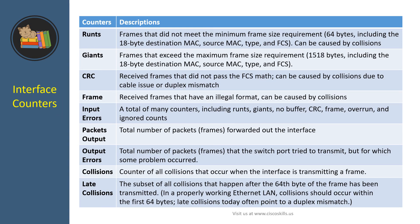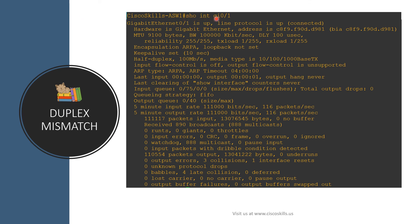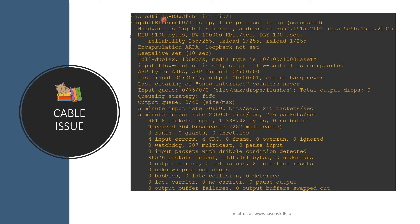The 'show interface' command gives you a list of counters. In normal operation, all counters should be equal to zero. If a counter is greater than zero, you can use the table to find out the cause. From the same 'show interface gi0/1' command on asw1, scrolling down you will see four late collisions — from the table, late collisions often point to a duplex mismatch. Logging into dsw3 and issuing 'show interface gi0/1', you see four CRC errors — CRC errors can be caused by collisions due to a cable issue or a duplex mismatch.